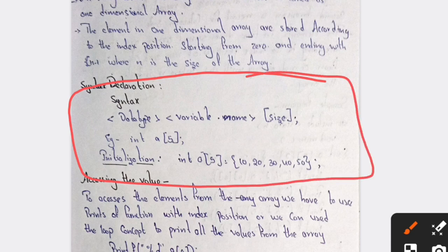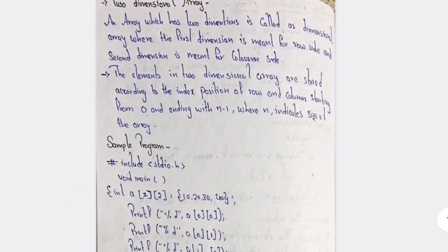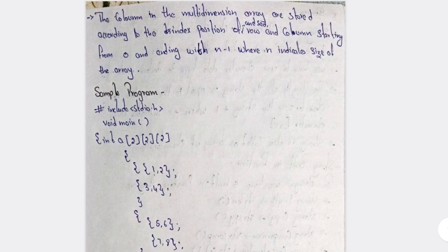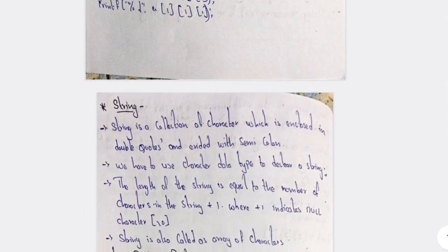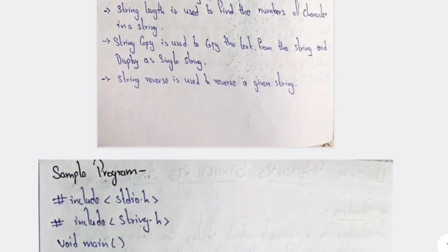If you want passing marks in C language, then remember first chapter, second chapter, and fifth chapter programs plus theory questions — you will definitely get passing marks in this subject. Next, two-dimensional array with its syntax and program, and multi-dimensional with its sample program. I have already uploaded this in the Telegram group.